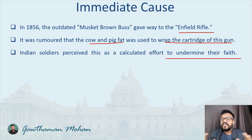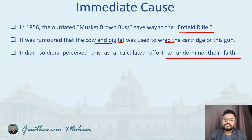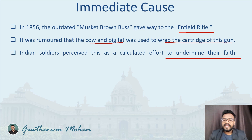In this video, we tried to understand the various factors that contributed to the revolt of 1857 — the political factors, the economic factors, the social factors, the military factors, and the immediate cause for the revolt. Hope you have understood the session. If the session was useful for you, please do share it with your friends, like, comment, and subscribe to the channel.